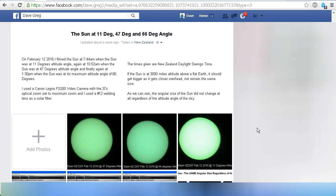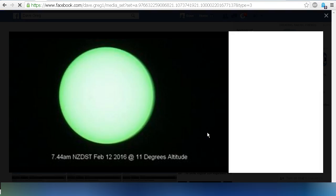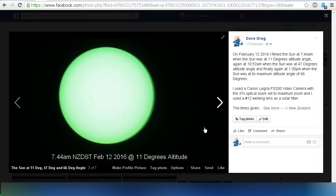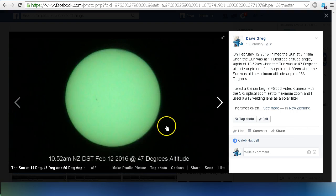So let's have a look at those images that I took. Here is the first one. This was taken at 7:44 a.m. New Zealand daylight saving time on February the 12th, 2016, when the Sun was at 11 degrees altitude angle.